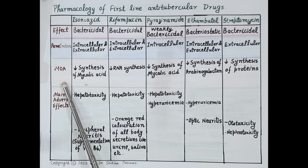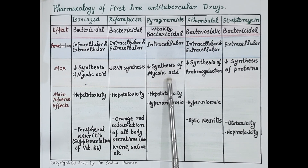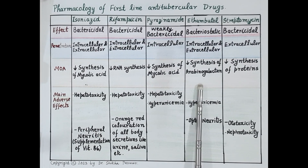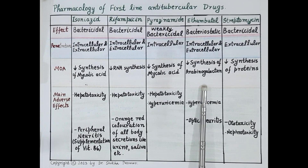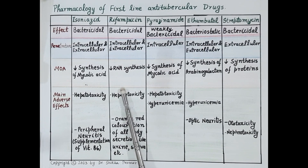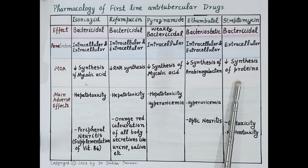Regarding mechanism of action: isoniazid and pyrazinamide inhibit synthesis of mycolic acid, while ethambutol inhibits synthesis of arabinogalactan — so these three drugs prevent cell wall synthesis of Mycobacterium tuberculosis. Rifampicin inhibits bacterial DNA-dependent RNA polymerase, thereby preventing synthesis of bacterial RNA, which further inhibits bacterial protein synthesis and results in bacterial death. Streptomycin also inhibits synthesis of bacterial proteins.